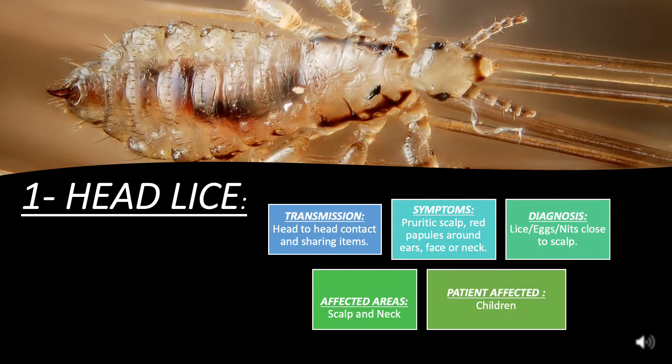Head lice: Transmission occurs through head-to-head contact and sharing items. Symptoms include pruritic scalp and red papules around the ears, face, or neck. Diagnosis is made by finding lice or nits close to the scalp. Affected areas are the scalp and neck, and the patients most affected are children.